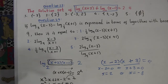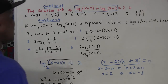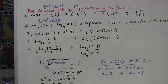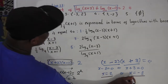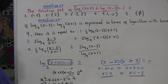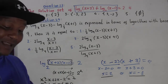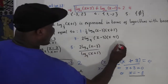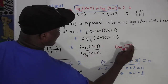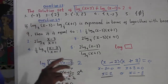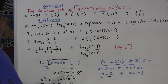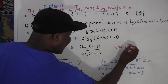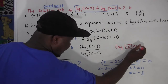Solving each factor: x equals 2 or x equals negative 3. Now it's very important to check which solution is valid. For logarithms, the argument — whatever is inside the log — must be positive. Log of a negative number gives an error, and log of zero is undefined. So anything inside the log must be greater than zero.